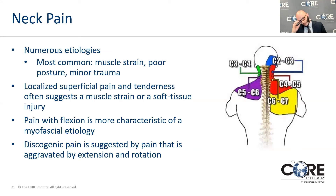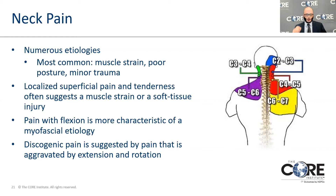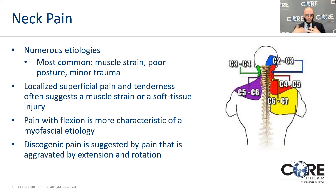Neck pain is very different. When people present with just neck pain, most commonly that is not due to nerve compression. The most common cause is muscle strain — one of the most common reasons patients present to medical providers and urgent care. Other causes include poor posture or minor trauma, usually a localized superficial pain tender to the touch, worse when you bend your chin toward your chest because you're stretching those muscles. Other causes include arthritis itself or discogenic pain from the degenerated disc, usually aggravated by extension or looking up and rotation.